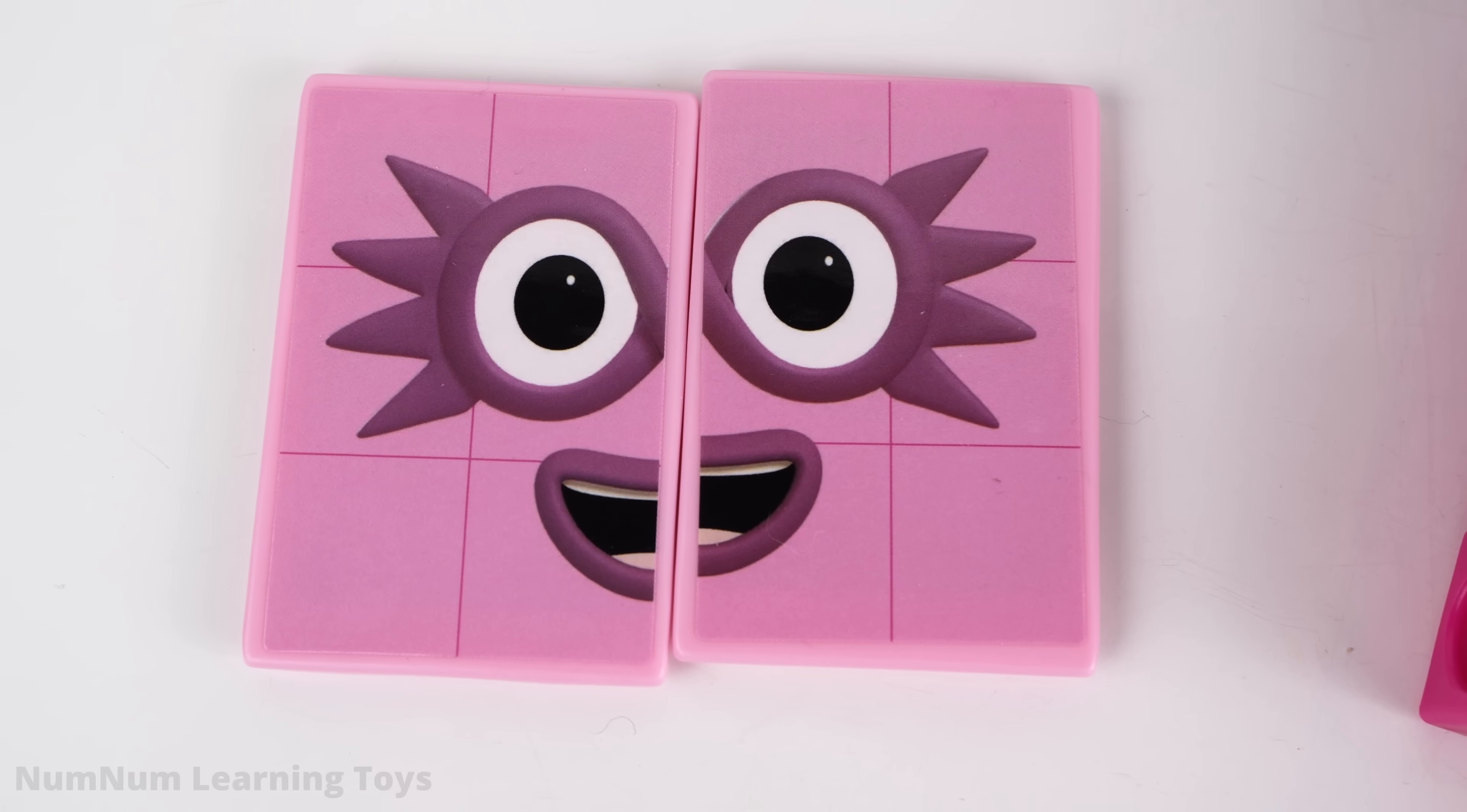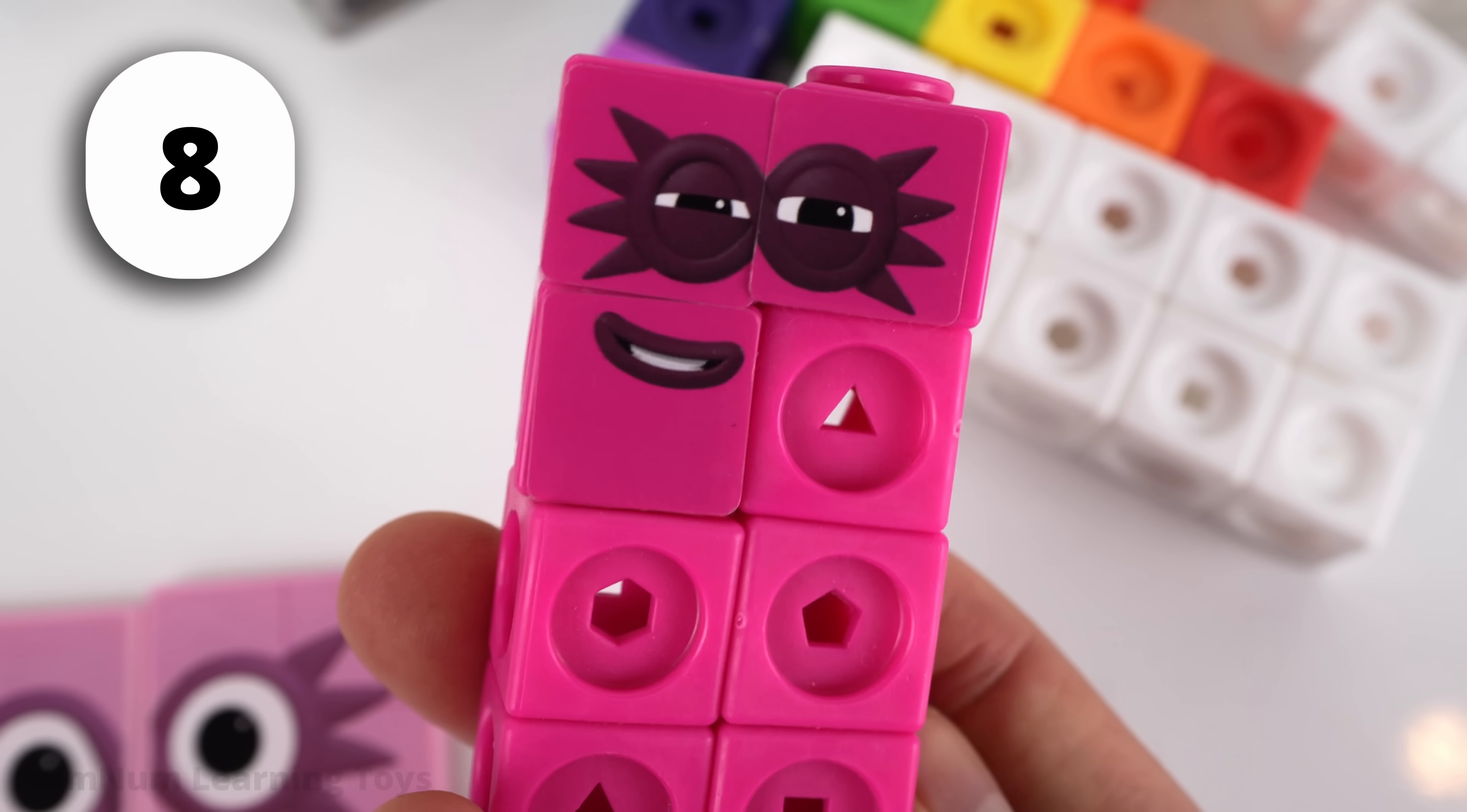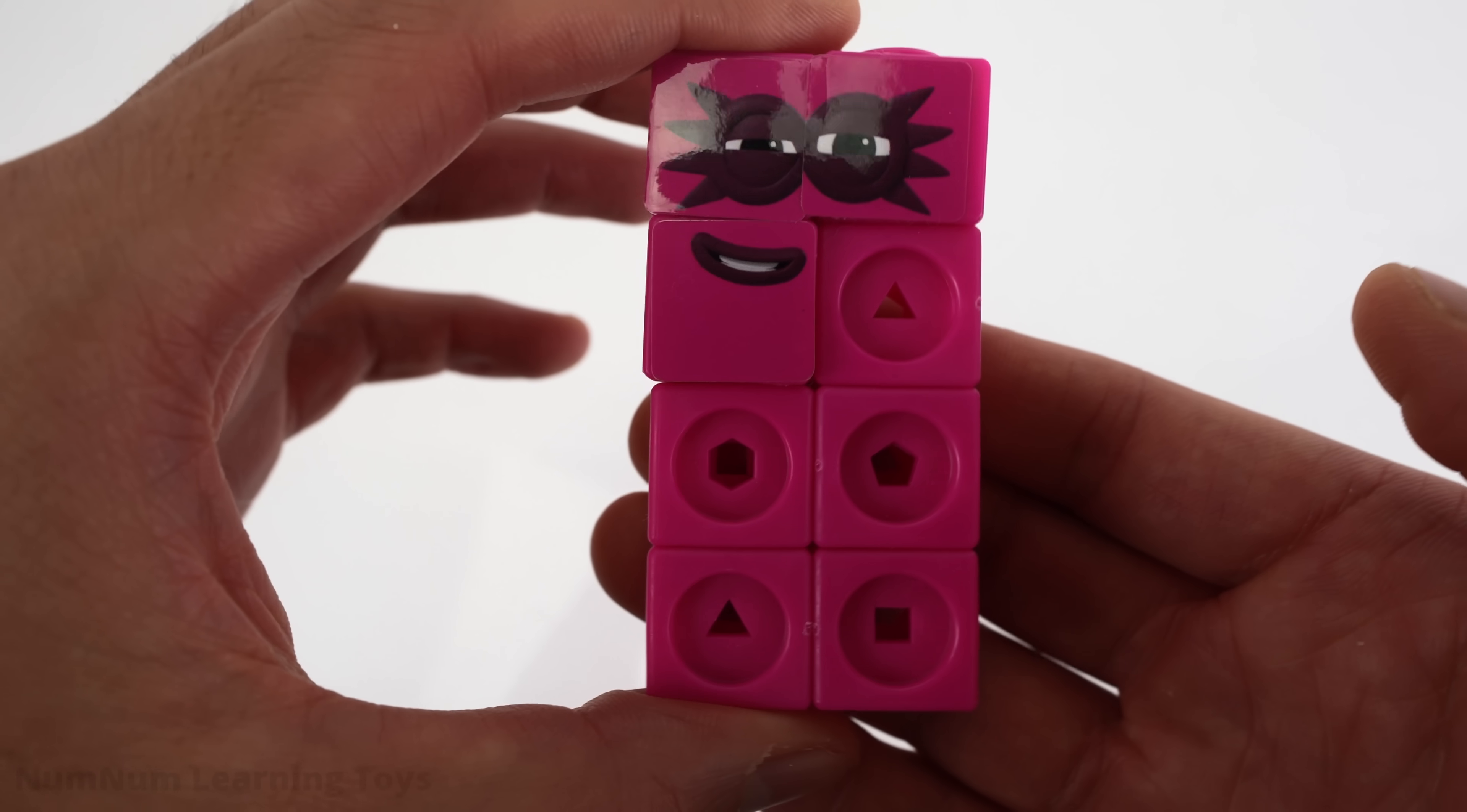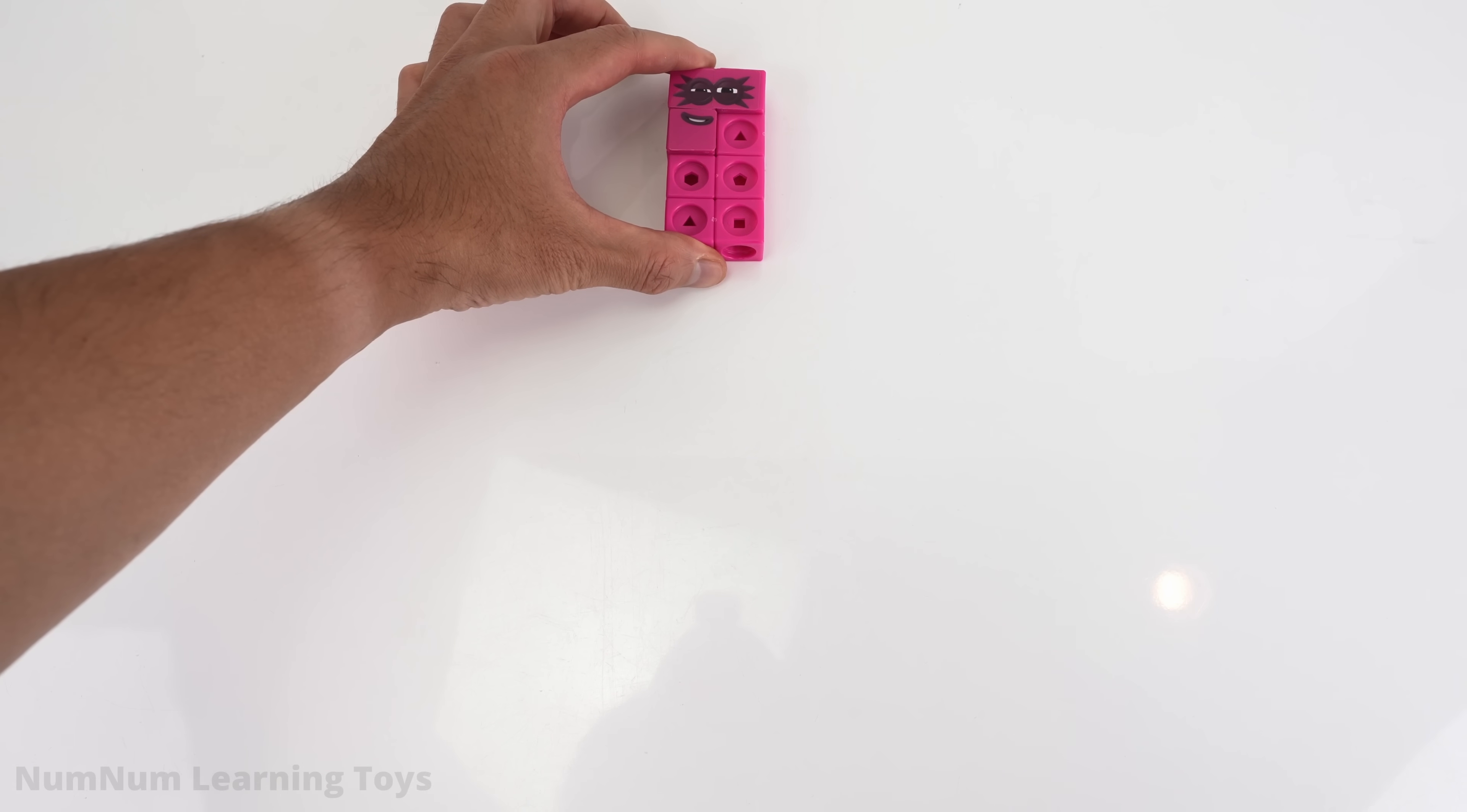We will start with the block to the right of 80's face. It's his friend, 8. 8 wears a superhero mask, just like 80. Let's put 8 at the very top, right here.